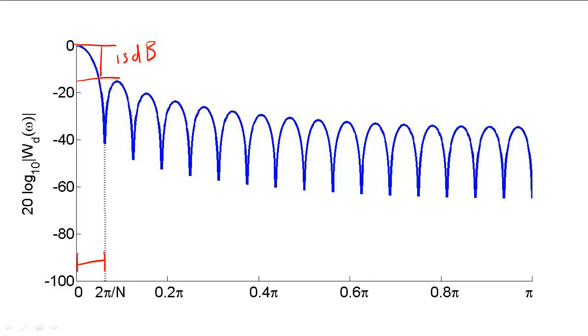Since these ripples are created by truncation, it is tempting to believe that we could reduce the height of these ripples by increasing the length of N. Unfortunately, increasing the length of N reduces only the width of the ripples. The way to reduce the height of the ripples is to use a function whose truncation of the signal is less abrupt.